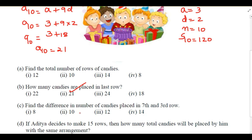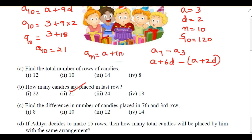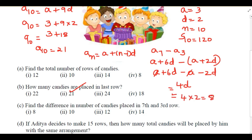Next question: find the difference in number of candies placed in the seventh and third row, meaning a₇ - a₃. Using aₙ = a + (n-1)d: a₇ = a + 6d and a₃ = a + 2d. So a₇ - a₃ = (a + 6d) - (a + 2d) = 4d = 4×2 = 8. The difference is 8.